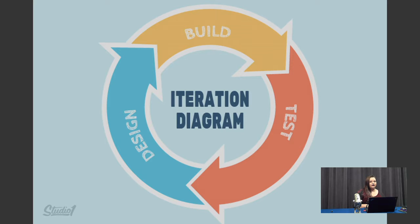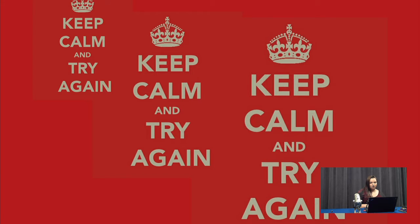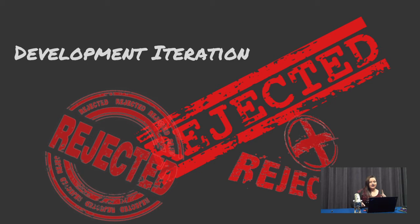To do this properly and most effectively, you should include your target audience so that you get exactly what you need. You'll find yourself going through this a lot in order to refine your design, even if you don't realize it. This is not to be confused with development iteration, which is the unexpected iteration that occurs when building a product — including reworking — where time and energy are wasted.